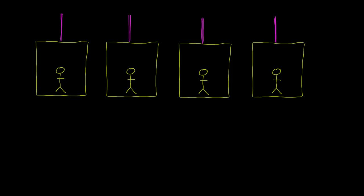What I want to do in this video is think about how the normal force might be different in different scenarios. Since my two-and-a-half-year-old son is obsessed with elevators, I thought I would focus on those. I've drawn four scenarios, and we can imagine them almost happening in some type of a sequence. In this first picture, I'm going to assume that the velocity is equal to zero — in other words, this elevator is stationary.